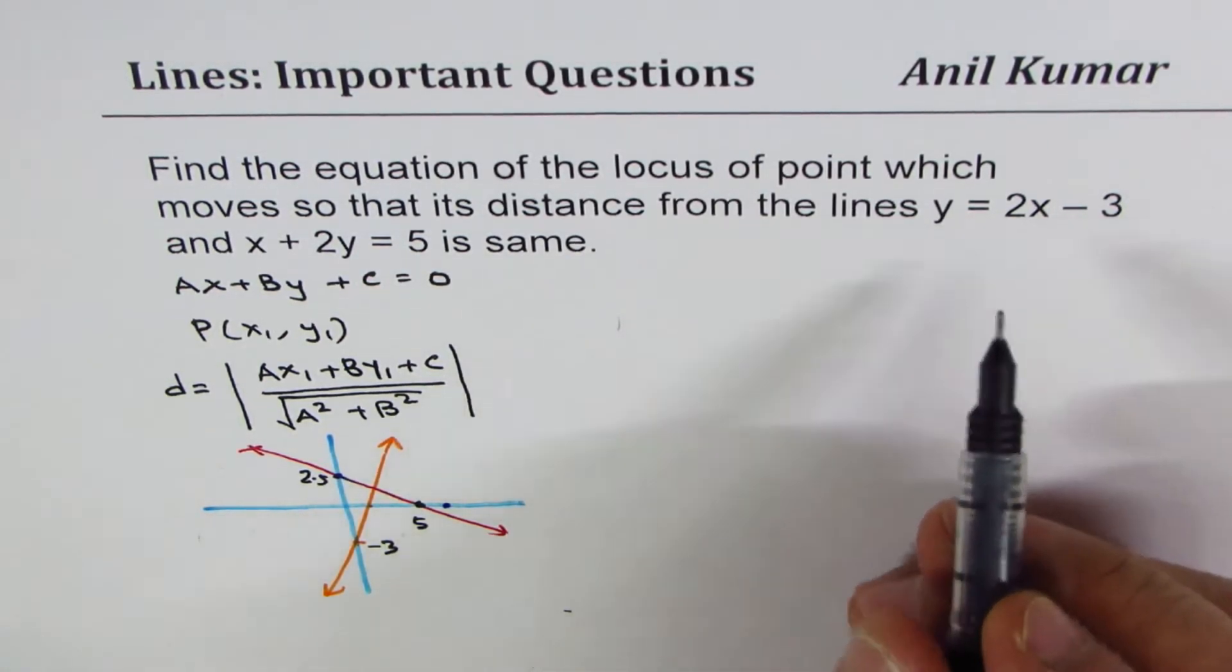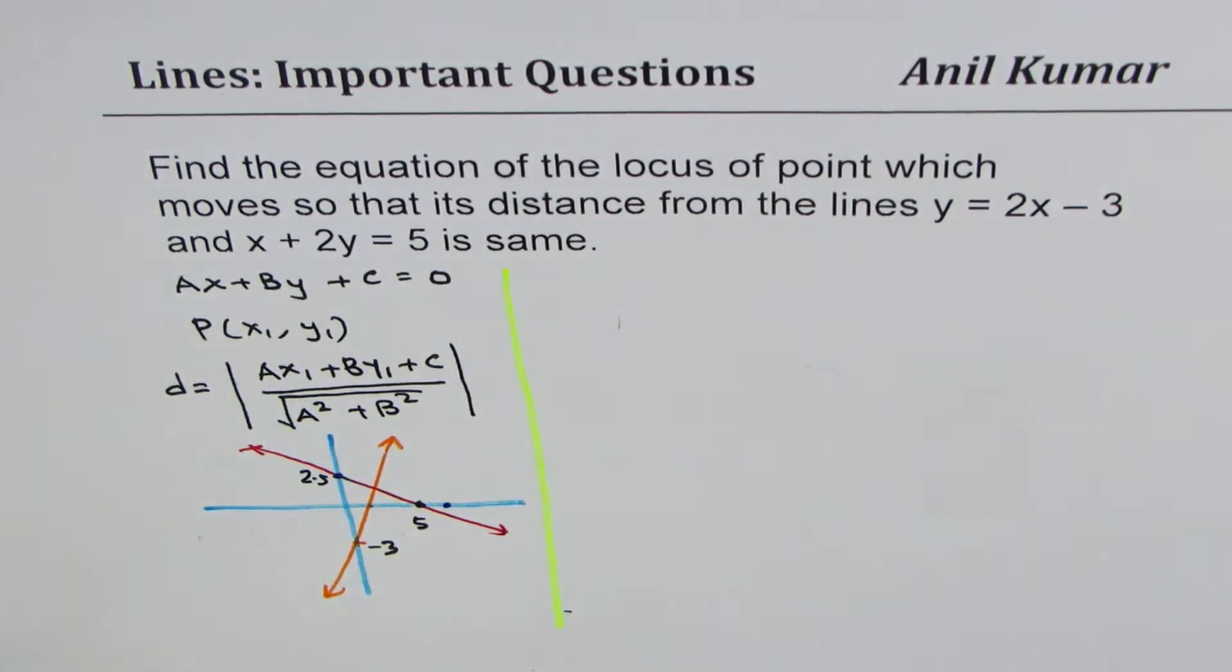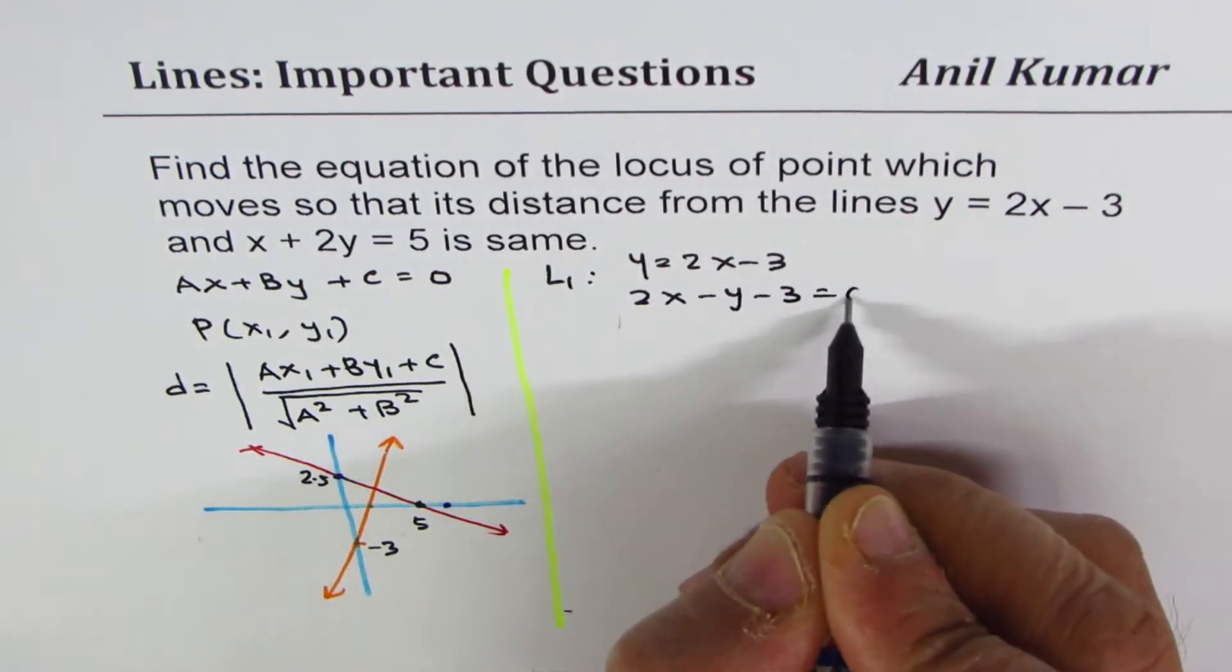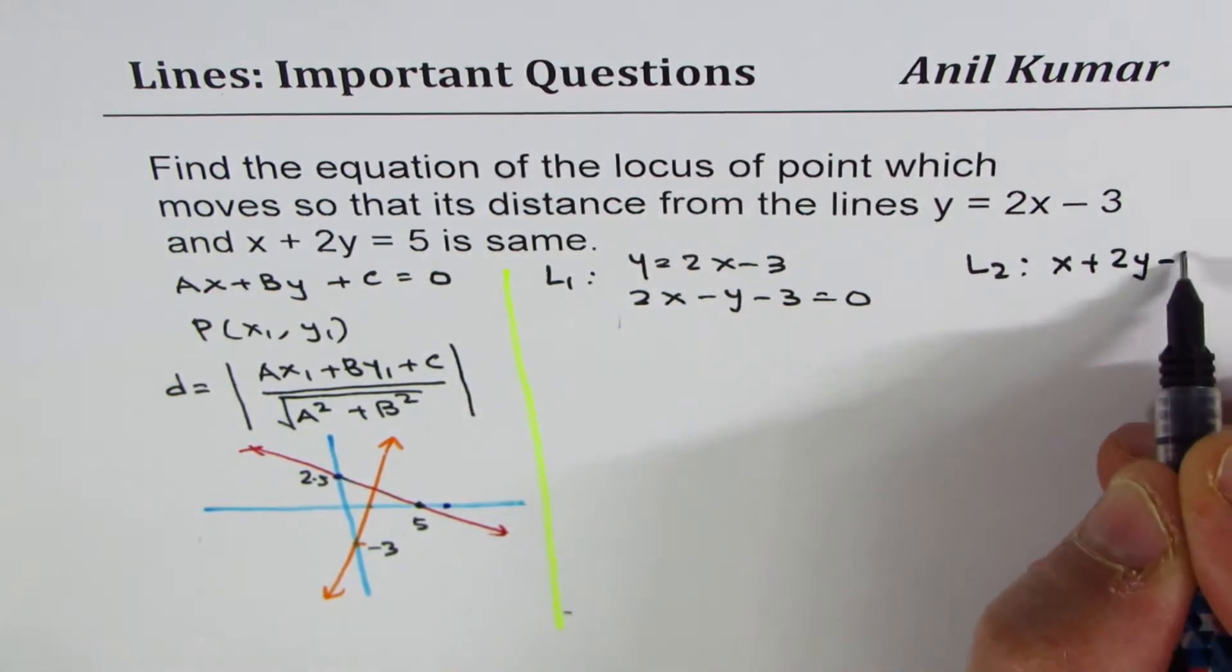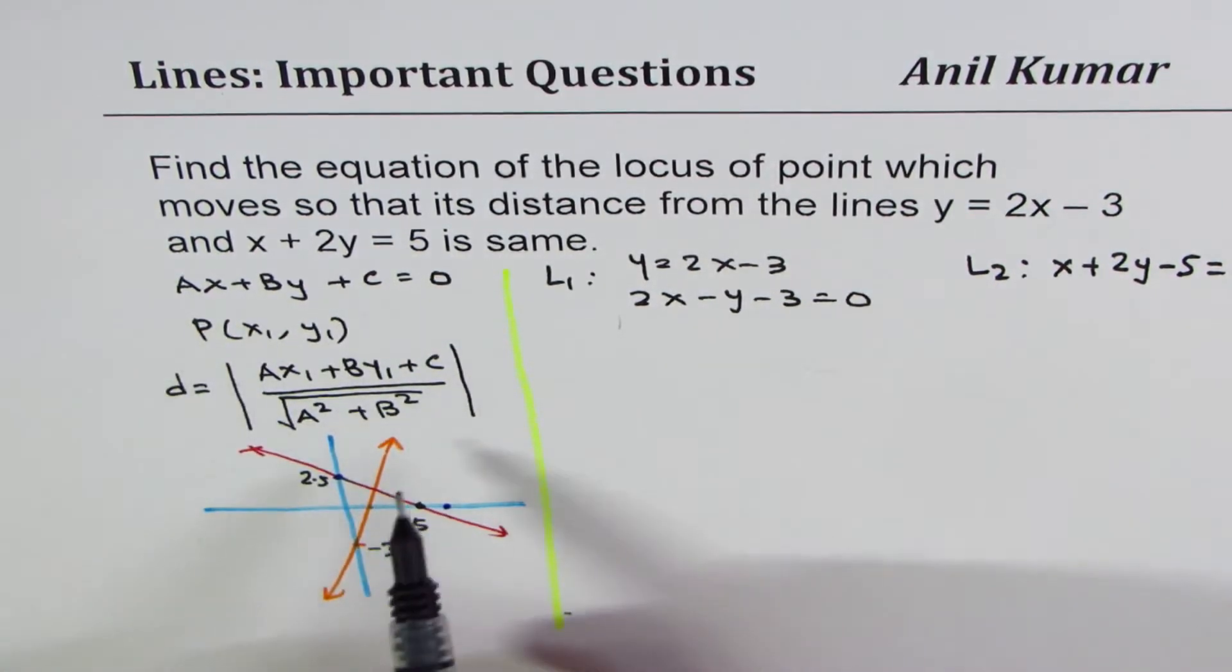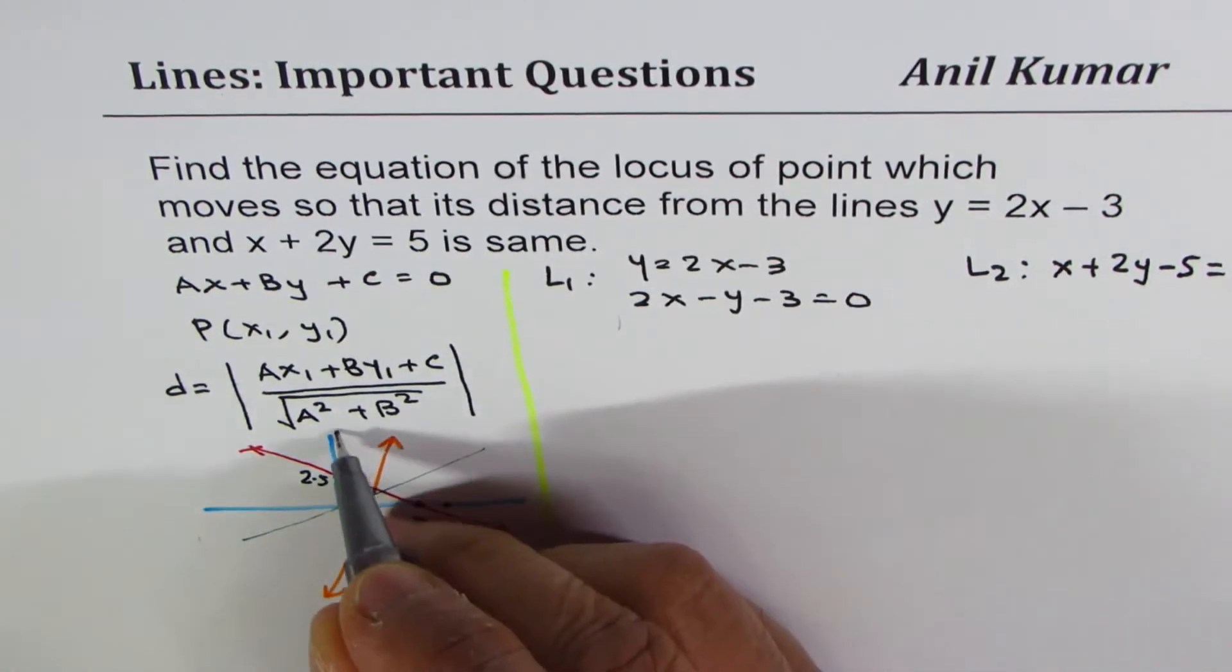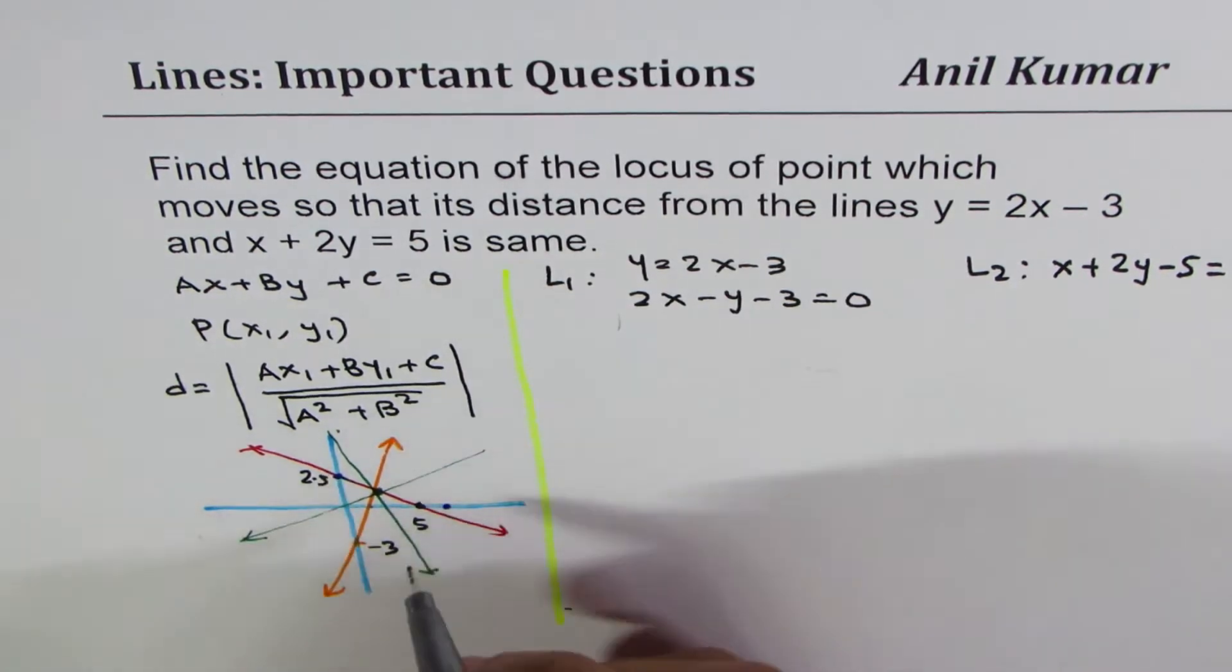Let's call, we'll name these lines. Line 1 is y equals 2x minus 3. I could write this as 2x minus y minus 3 equals 0. Line 2 is x plus 2y minus 5 equals 0. So these are the two lines in standard form. Let's consider general point x, y. We want locus of points which move so that its distance from these lines is same, means equal, right? So it could be along this path or could be along this path. Those will be common points. We may get two solutions.